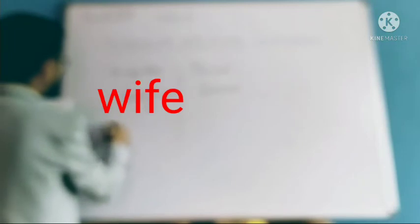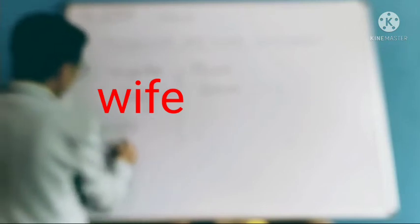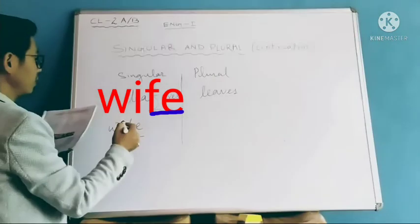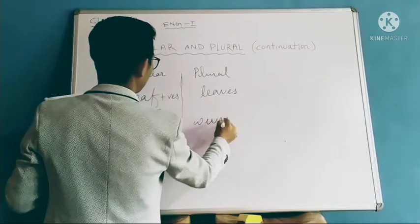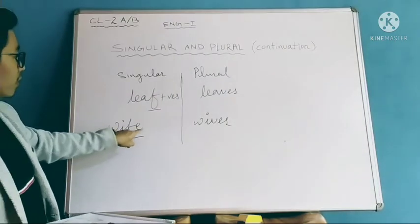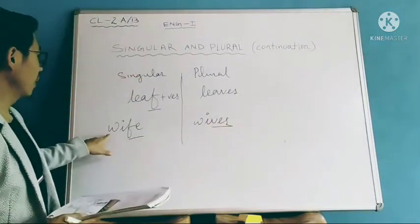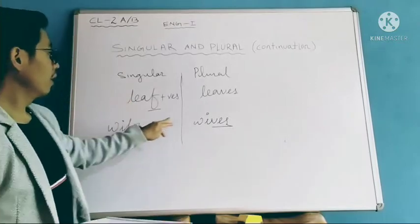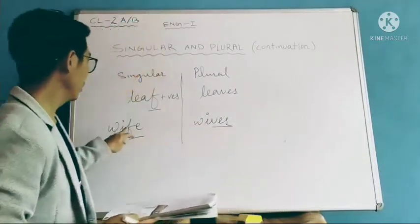In the same way, for a word that ends with FE, let's take the example W-I-F-E — 'wife'. Here we remove the FE and replace it with VES, giving us W-I-V-E-S — 'wives'. So the FE is removed and replaced by VES. One wife, many wives.